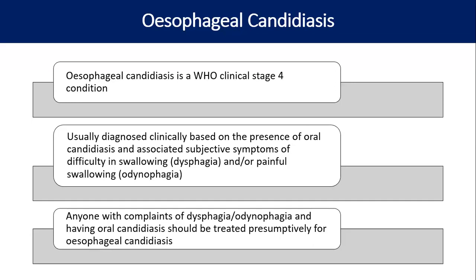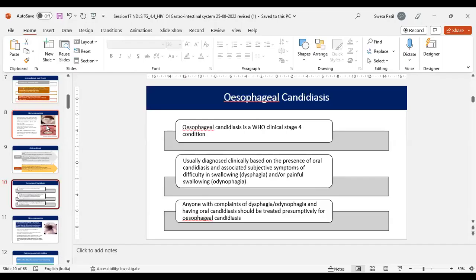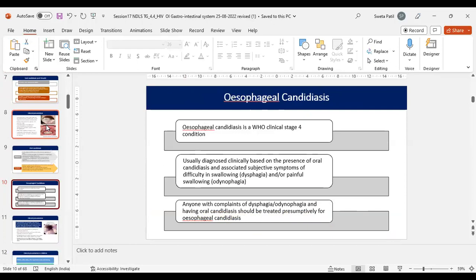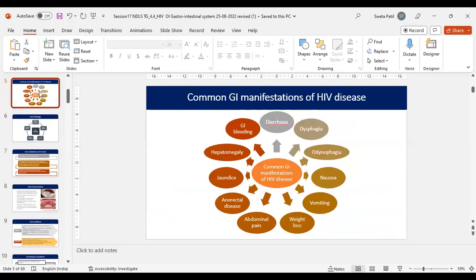Angular stomatitis presents as inflamed, painful cracks at the corners of the mouth — also known as angular cheilitis — and is usually caused by candida. However, bacteria like Staphylococcus can also cause it, and it usually responds well to antifungal creams such as clotrimazole or nystatin drops rubbed into the cracks. Oral aphthous ulcer is oval, cause not fully known, found in PLHIV. Higher CD4 count can also have this kind of ulcer, and treatment is effective with ART — if already on ART, ensure the patient is virally suppressed.